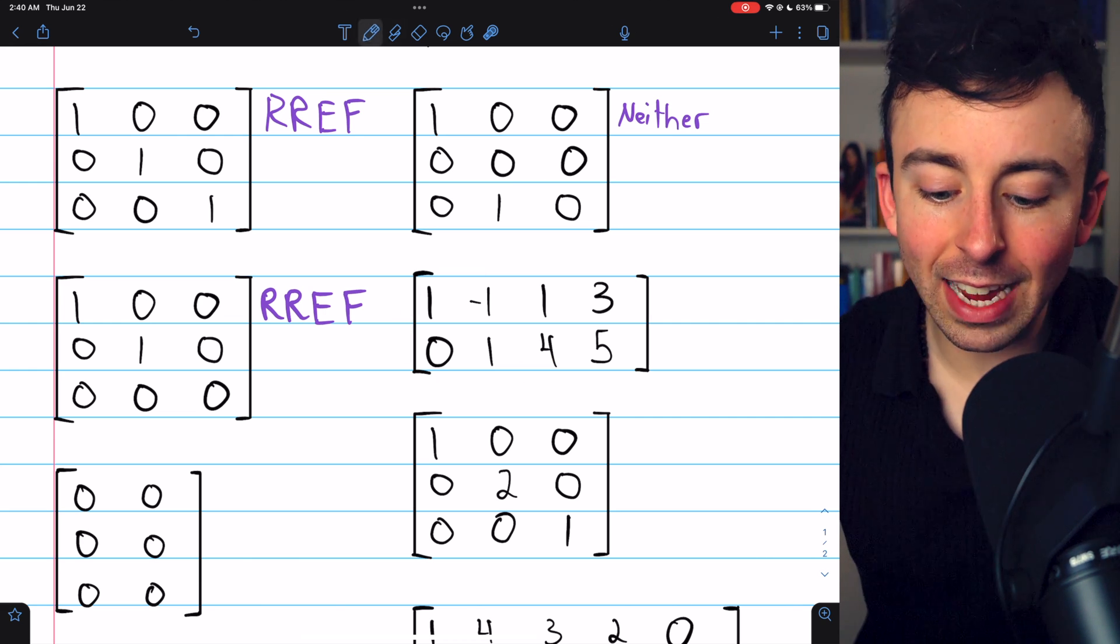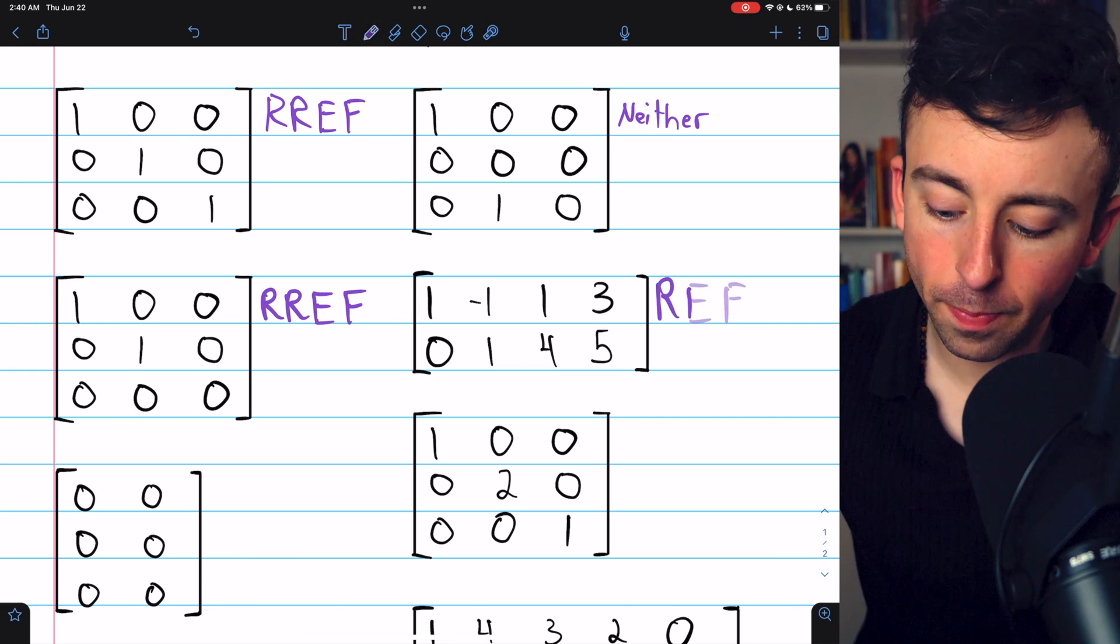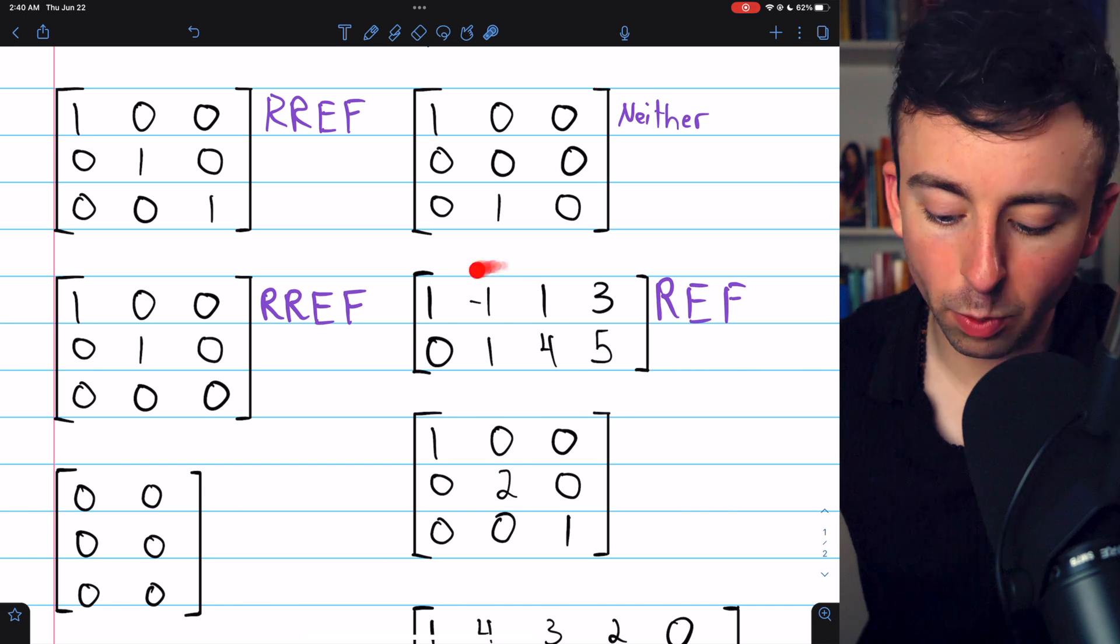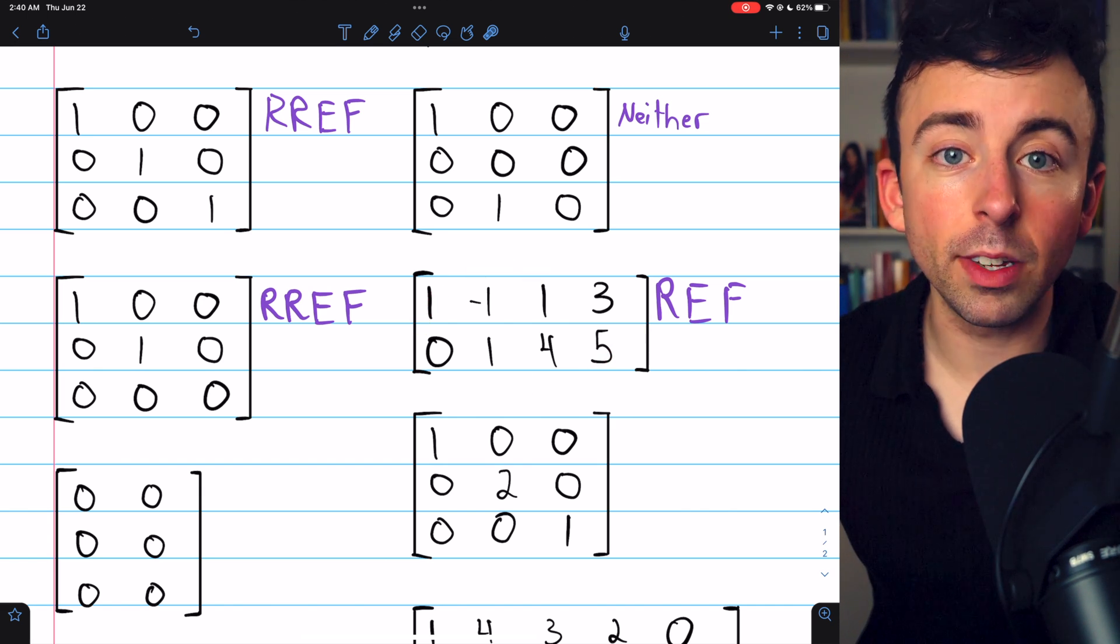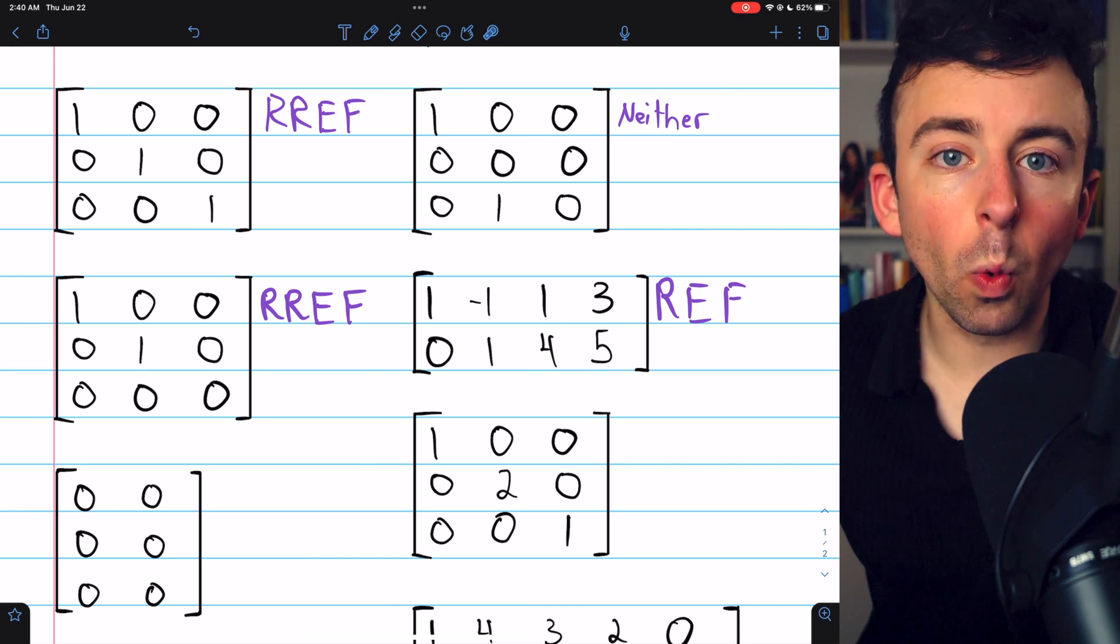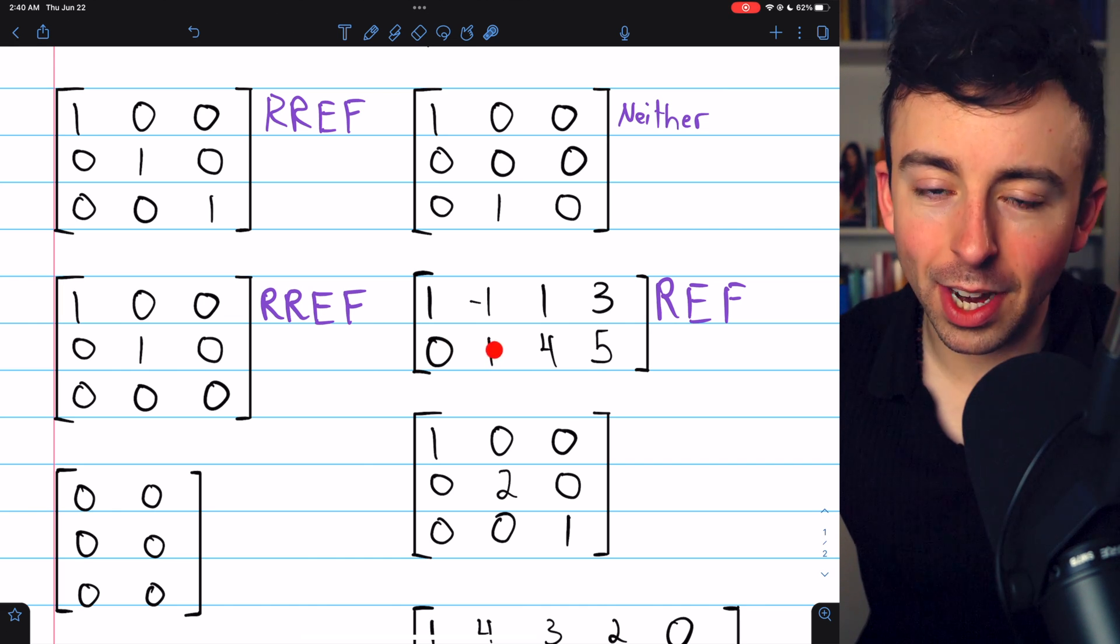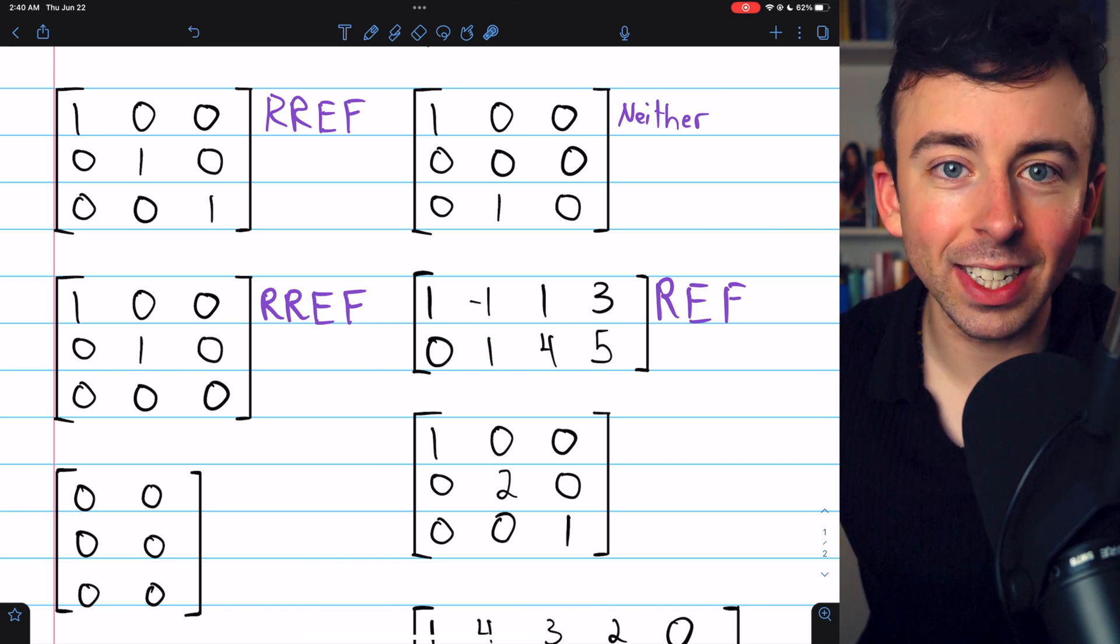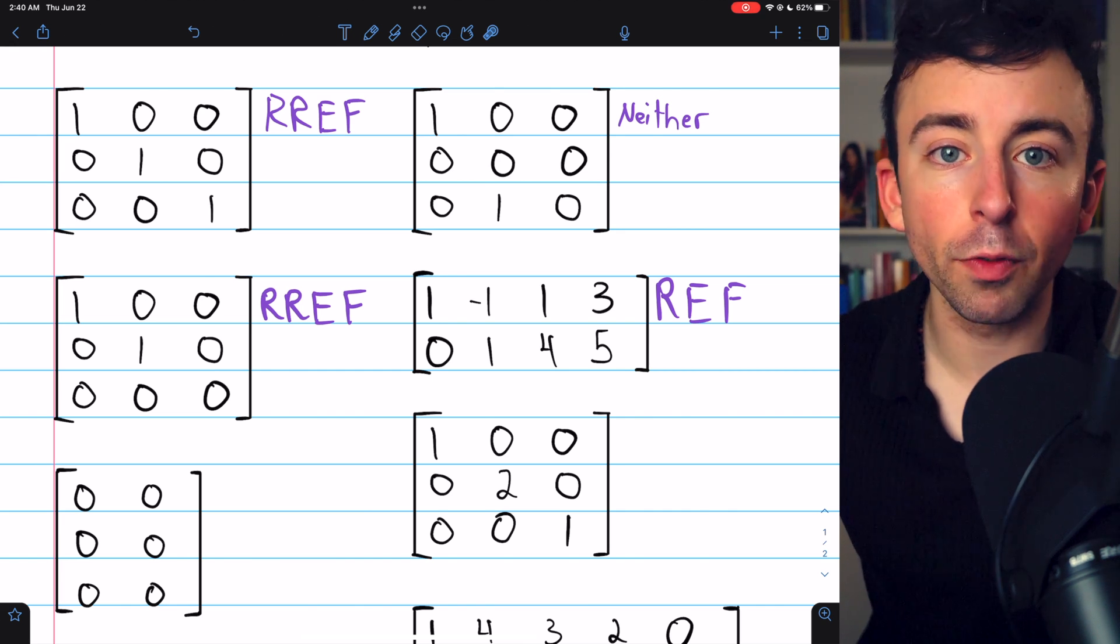This matrix is in row echelon form. All of the non-zero rows, which in this case are all of the rows, have leading entries of one. There are zeros below the leading ones and each one is further to the right than the one above it. So it is in row echelon form.